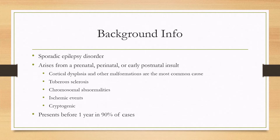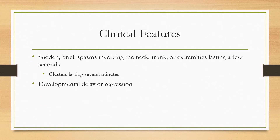It normally presents before one year of age in 90% of cases. These infants will have sudden brief spasms of the neck, trunk, or extremities and they will only last a few seconds. However, these spasms can cluster lasting minutes and they can have a hundred or more spasms a day. The reason you don't really see generalized tonic-clonic seizures is because their brains are not developed enough to have those. You can also see developmental delay or regression, which is a feature that most patients with infantile spasms will have.